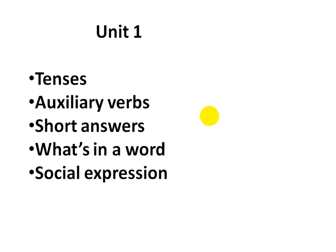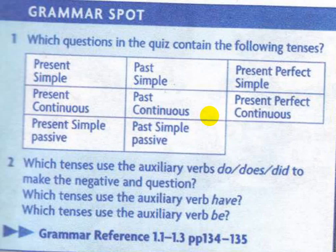Tenses in Arabic means 'zemen'. We have these tenses: present simple, past simple, present perfect simple, present continuous, past continuous, present perfect continuous, present simple passive, and past simple passive.